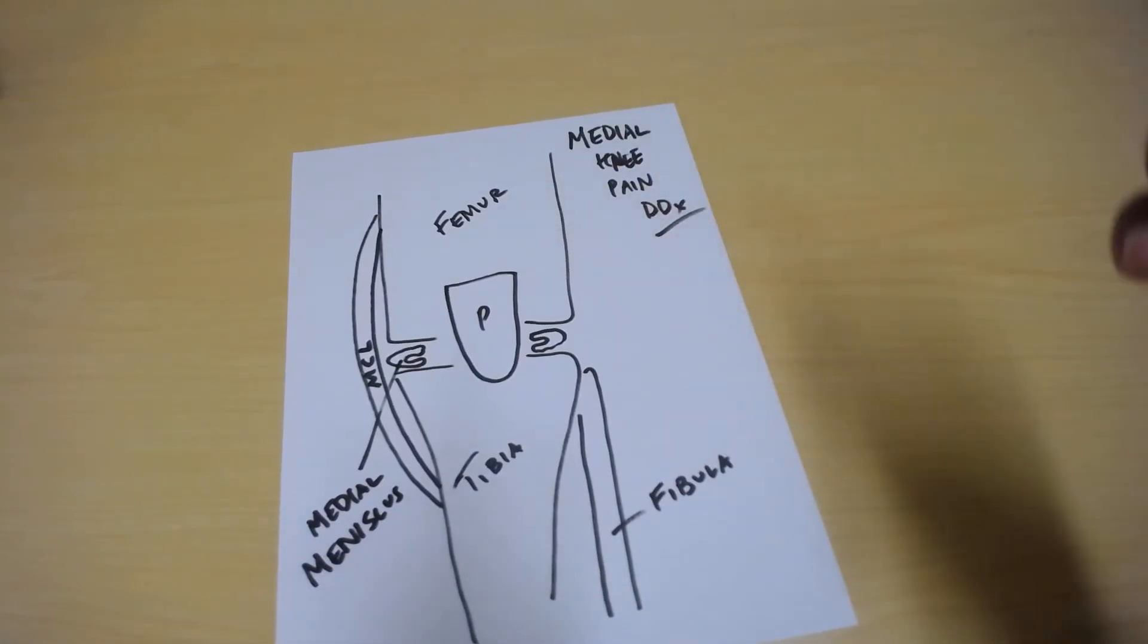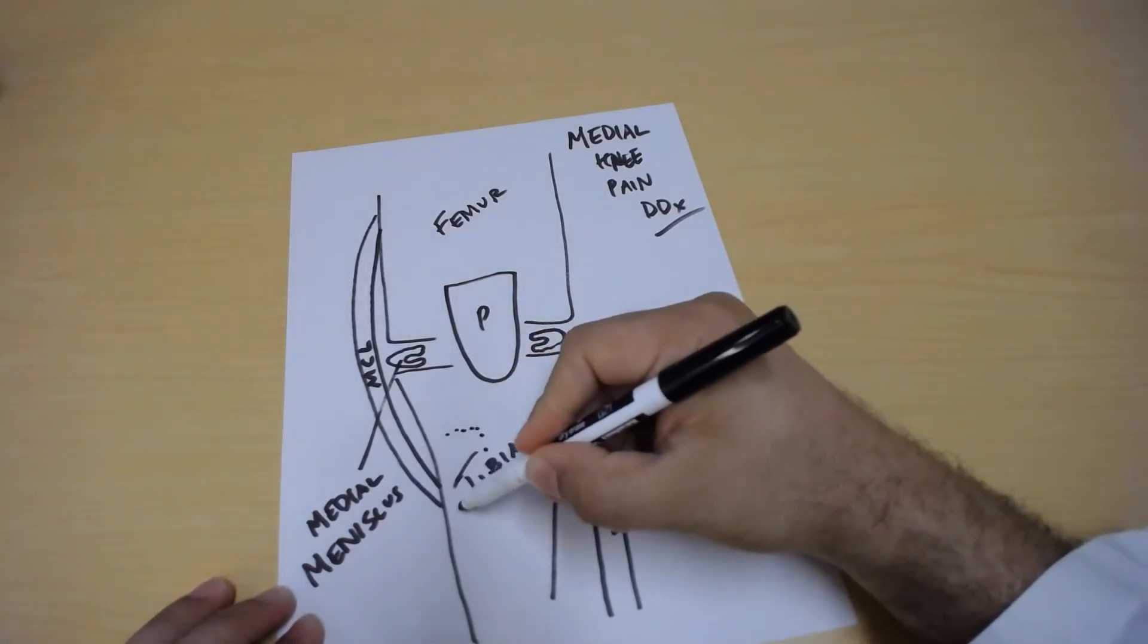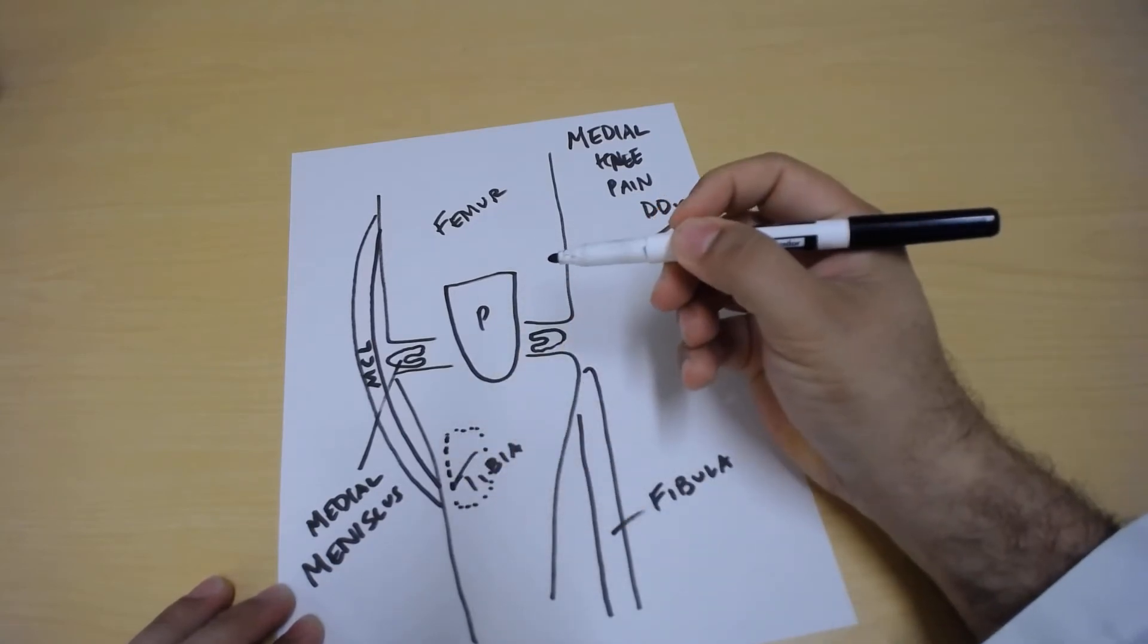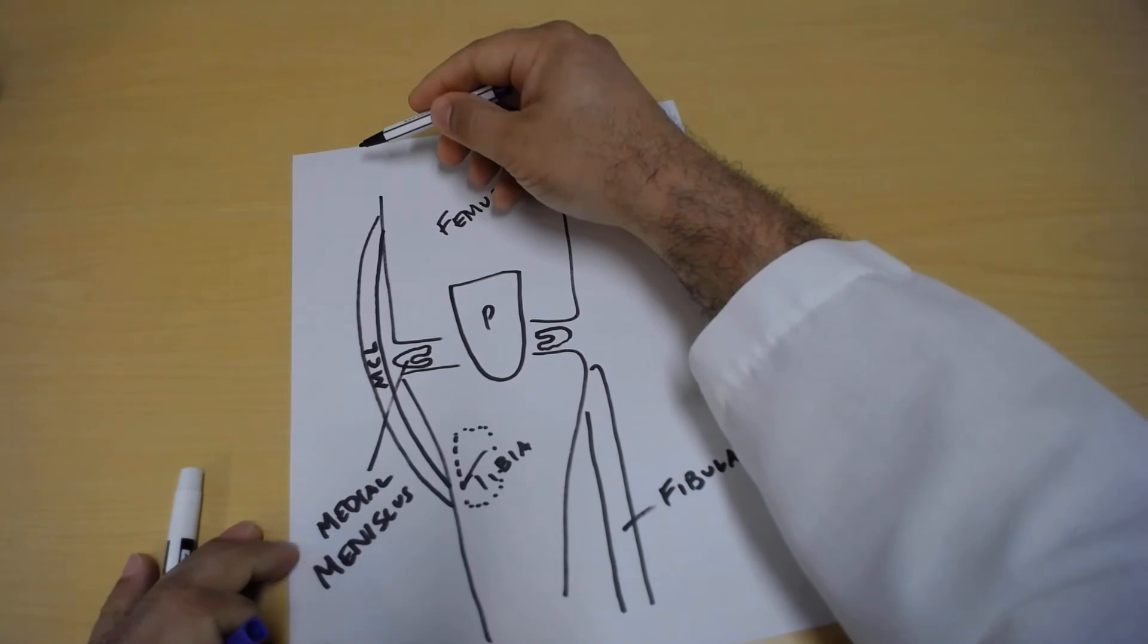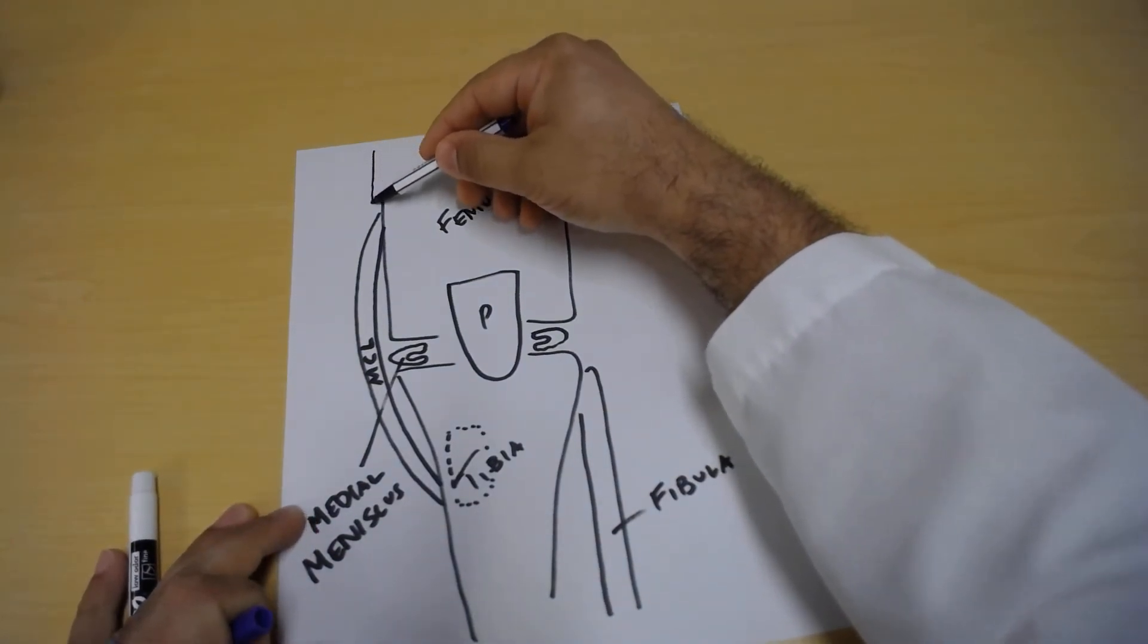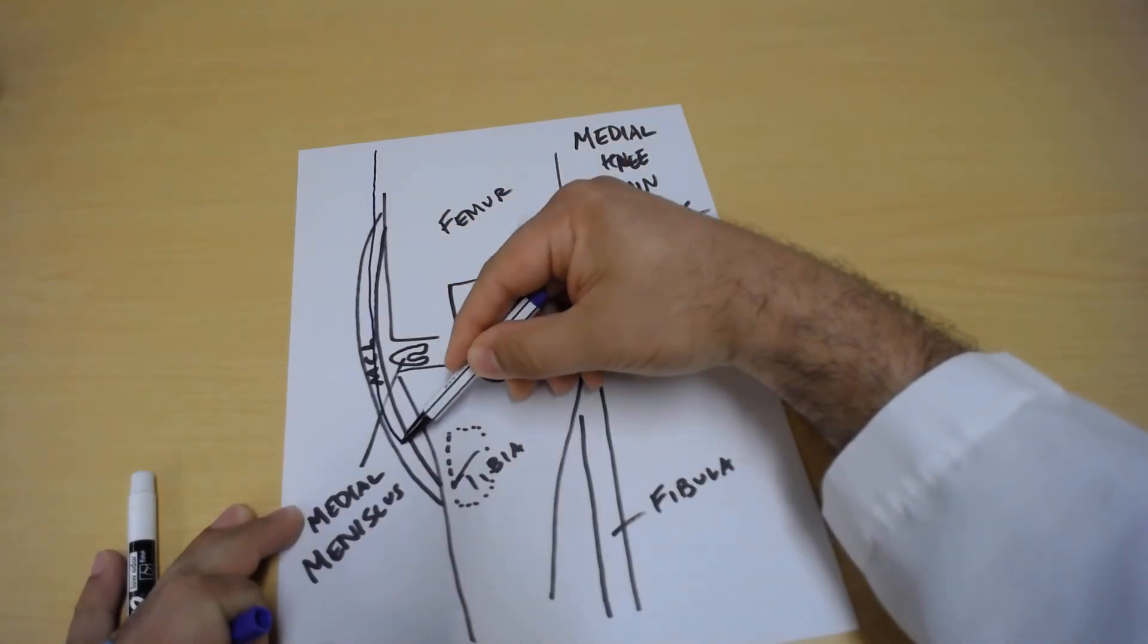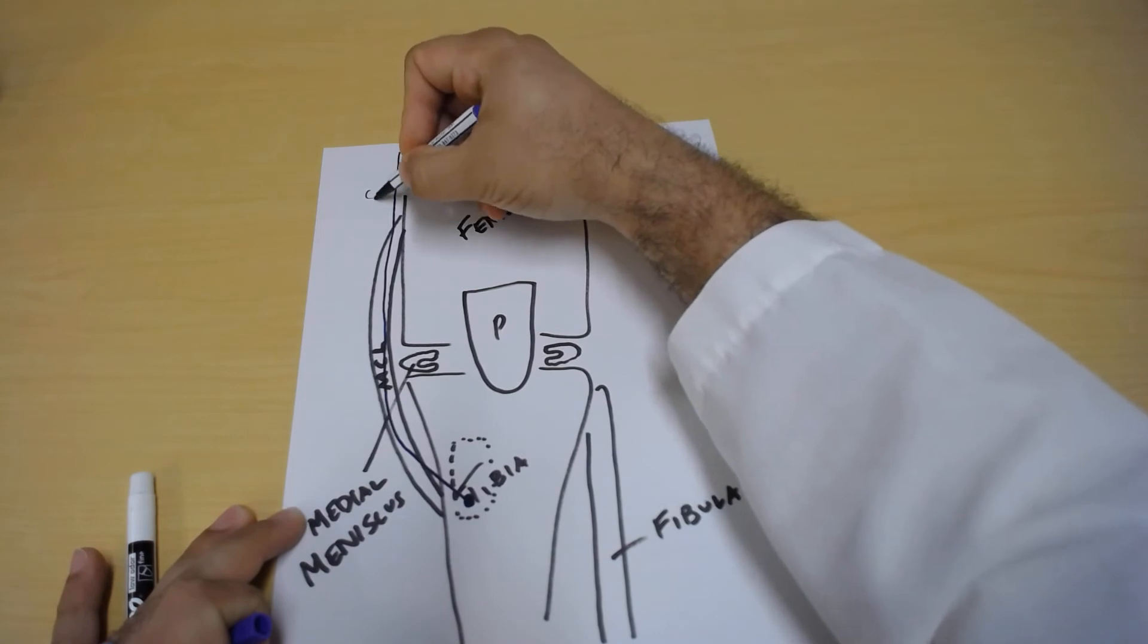And then the third structure is a group of tendons which come together and coalesce right on the anterior medial aspect of the tibia, right in this area. And those are three tendons. The first tendon is coming from the back of the thigh and that's called the semi tendinosis. It's one of the hamstring tendons which comes from behind the knee and comes and attaches right here.